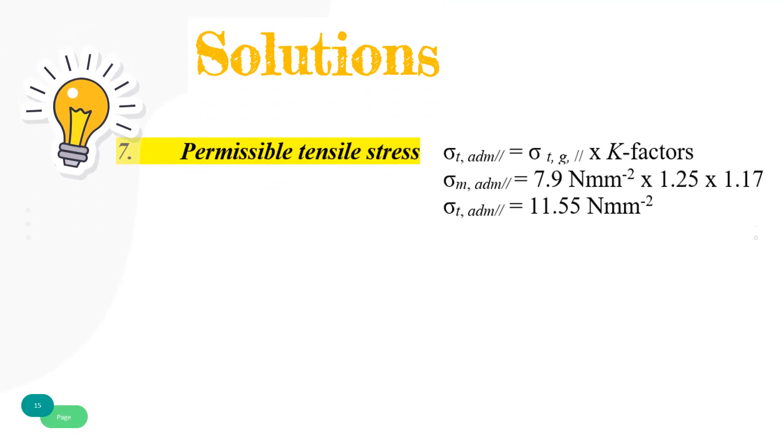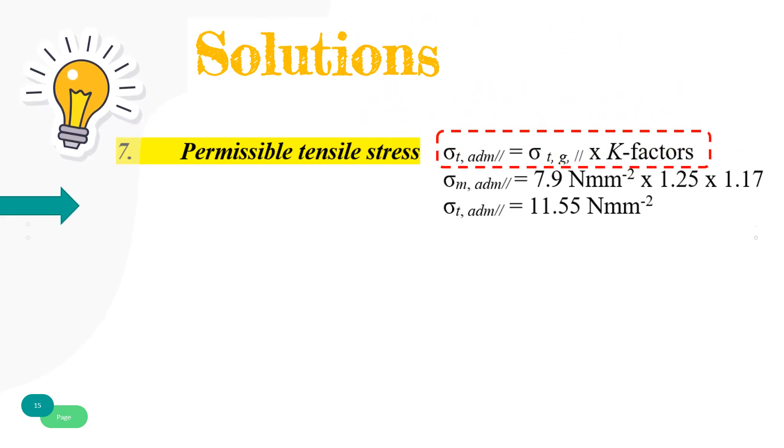Step number 7. The permissible tensile stress determined by multiplying grade stress by all related modification factors becomes 11.55 N/mm². The tensile permissible stress will be used in interaction quantity formulas checking in the following step.